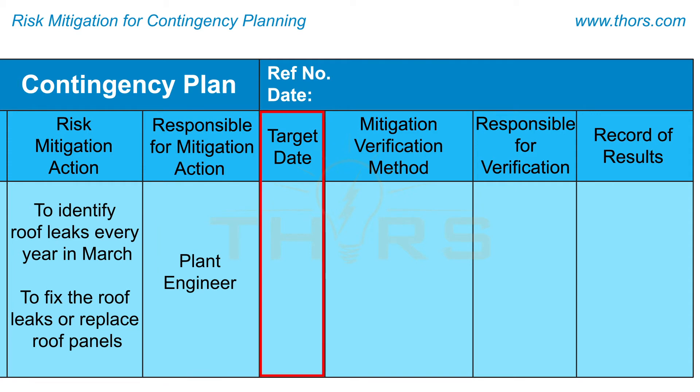Then, the target date to complete the mitigation action is entered as by mid of May in the target date column.